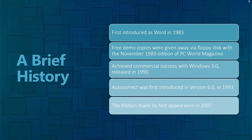Microsoft Word started way back in 1983 — that's when it was first officially introduced. It was based off a previous product; Microsoft recruited a couple of programmers from a prior company who took the product they had made there and turned it into the word editor we know today. The first free demo copies were given away via floppy disk — the old five-inch floppies.